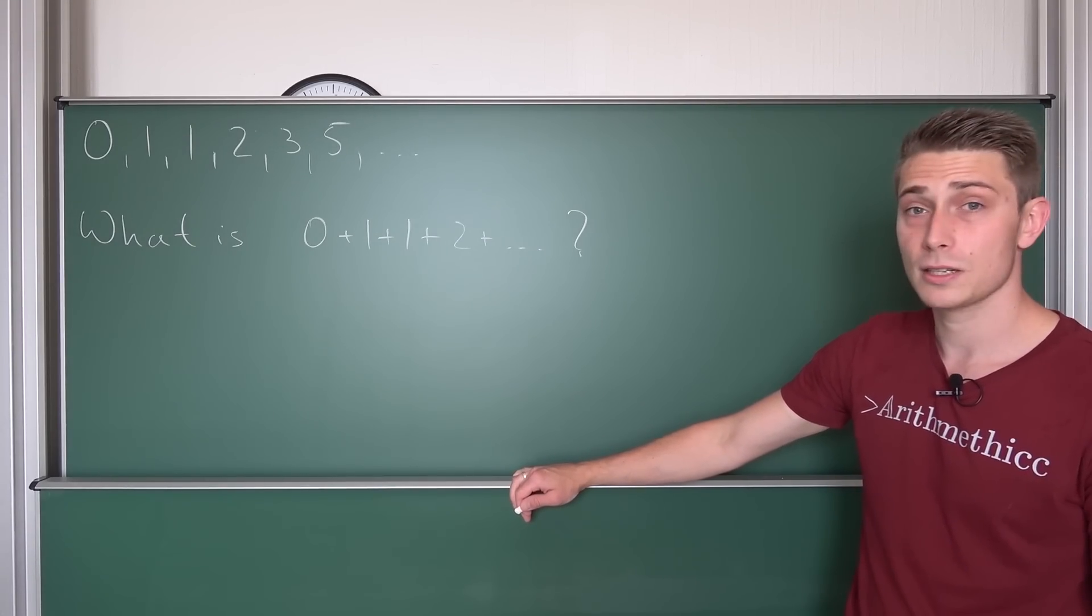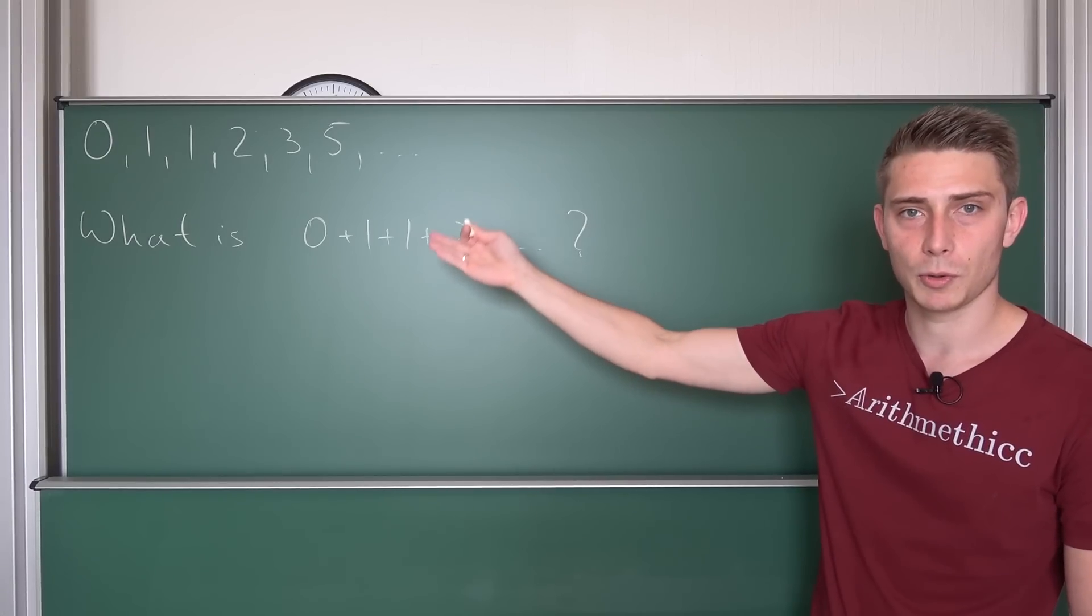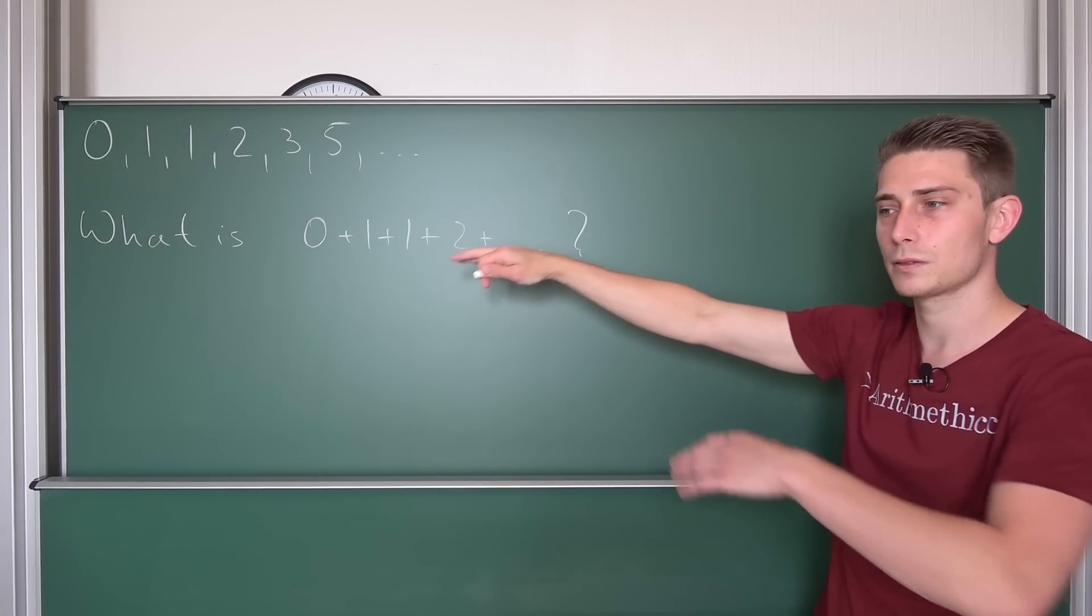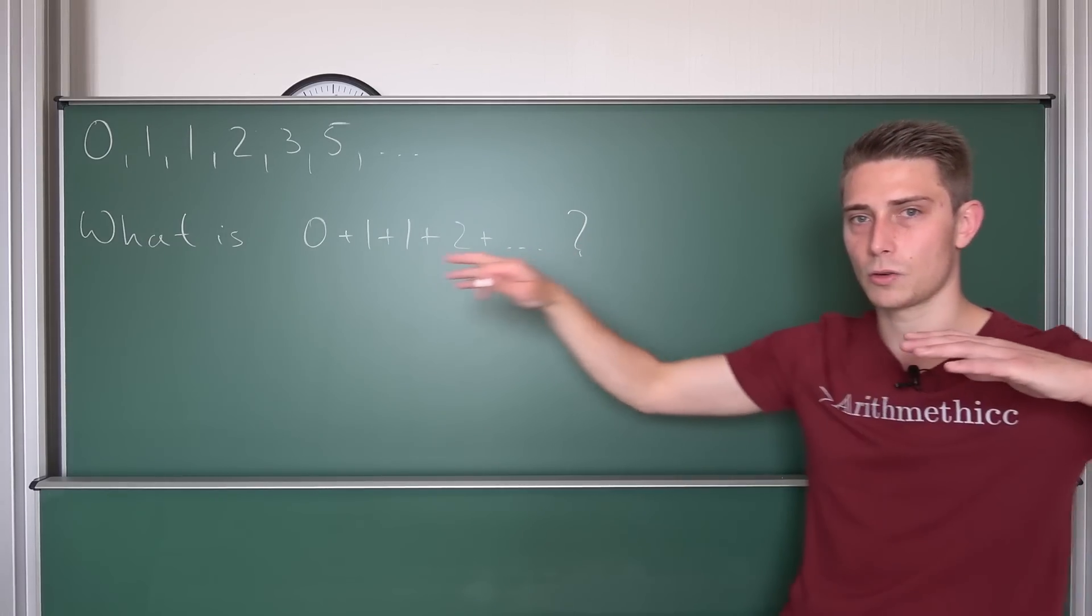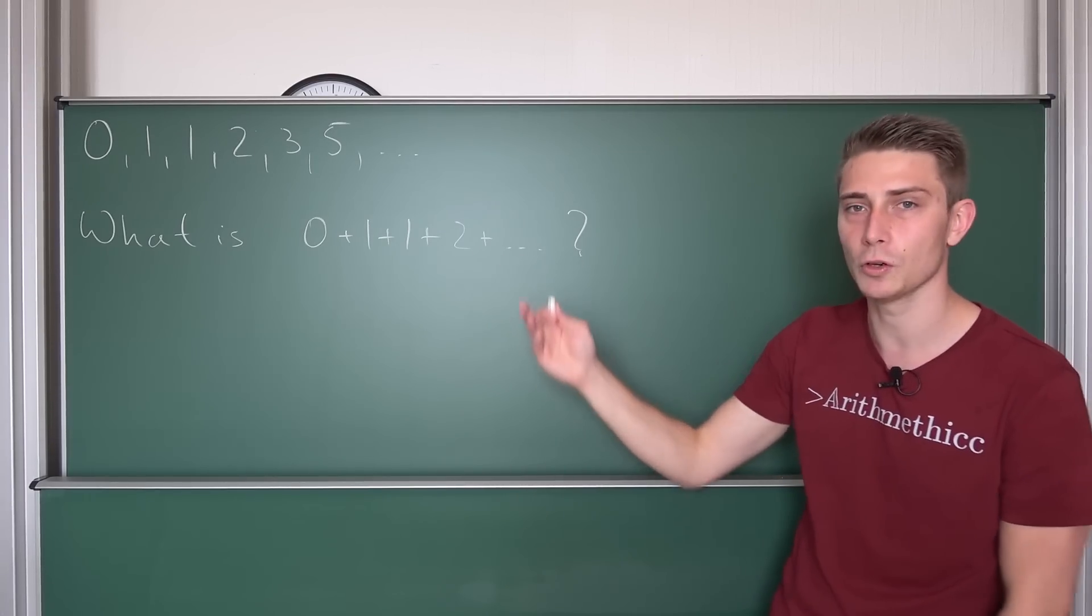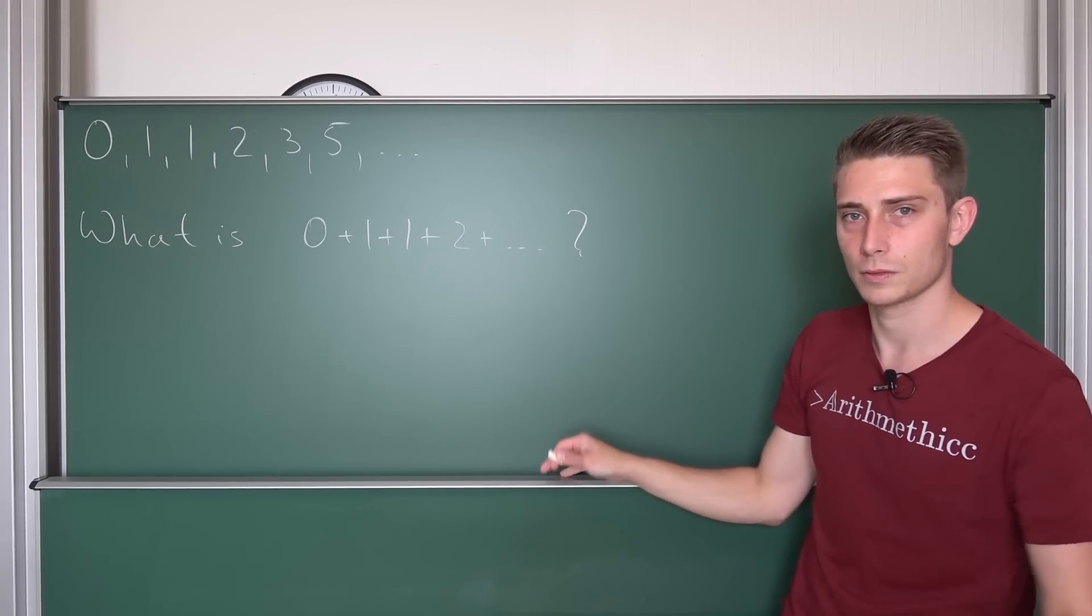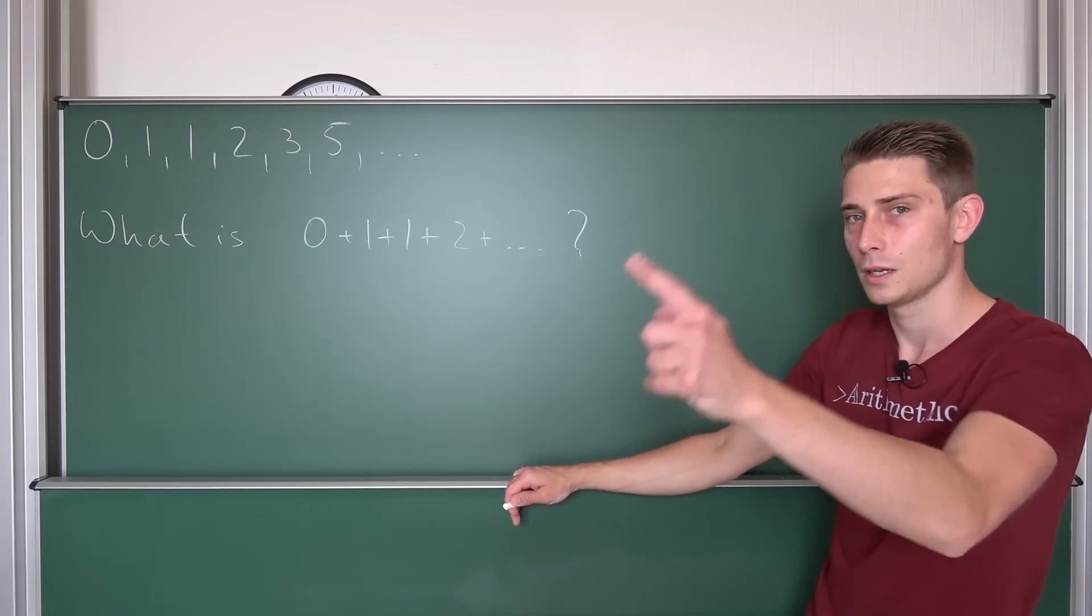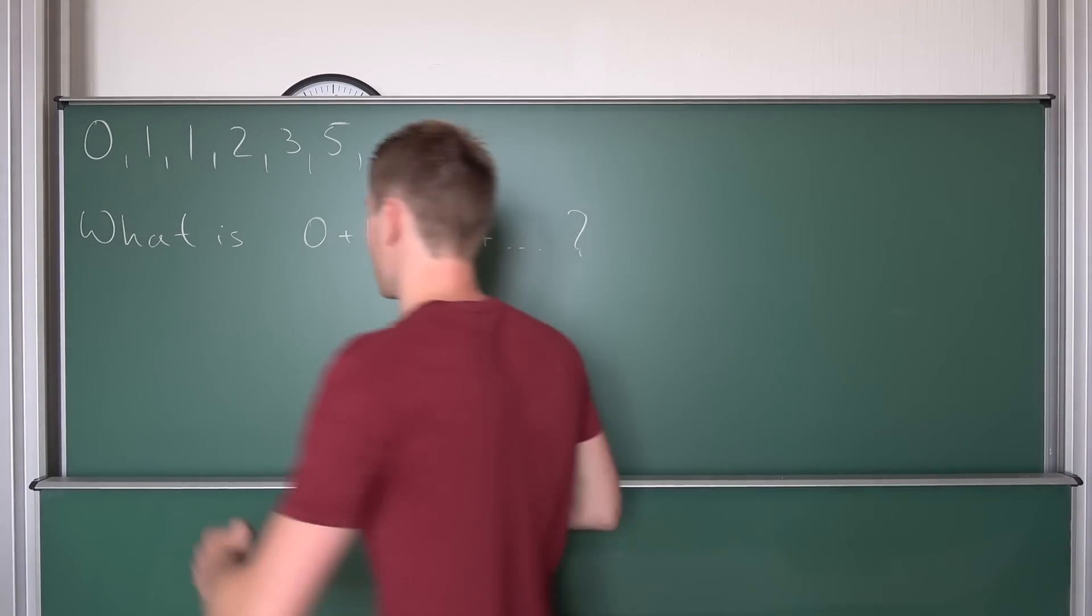What we are going to take a look at today is the sum of the Fibonacci numbers up until the nth Fibonacci number. If this were going to infinity, it wouldn't work out because it would diverge. If I add more and more positive things together that are greater than one, it's going to suck.